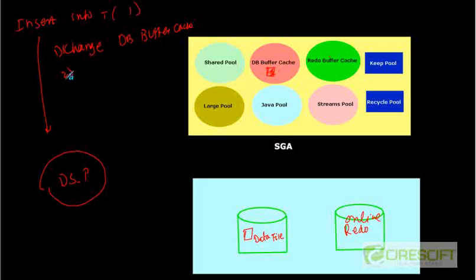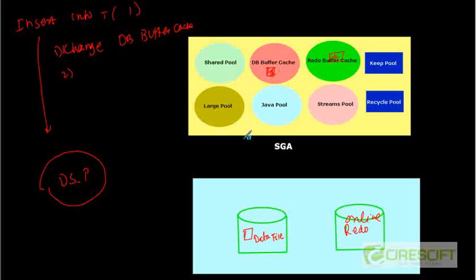After that, it's going to immediately store what information it needs so that it can redo this thing. That information is going to be stored in the redo buffer cache. So just immediately after you change the buffer in the DB buffer cache, we are going to store the information to redo this thing in the redo buffer cache.